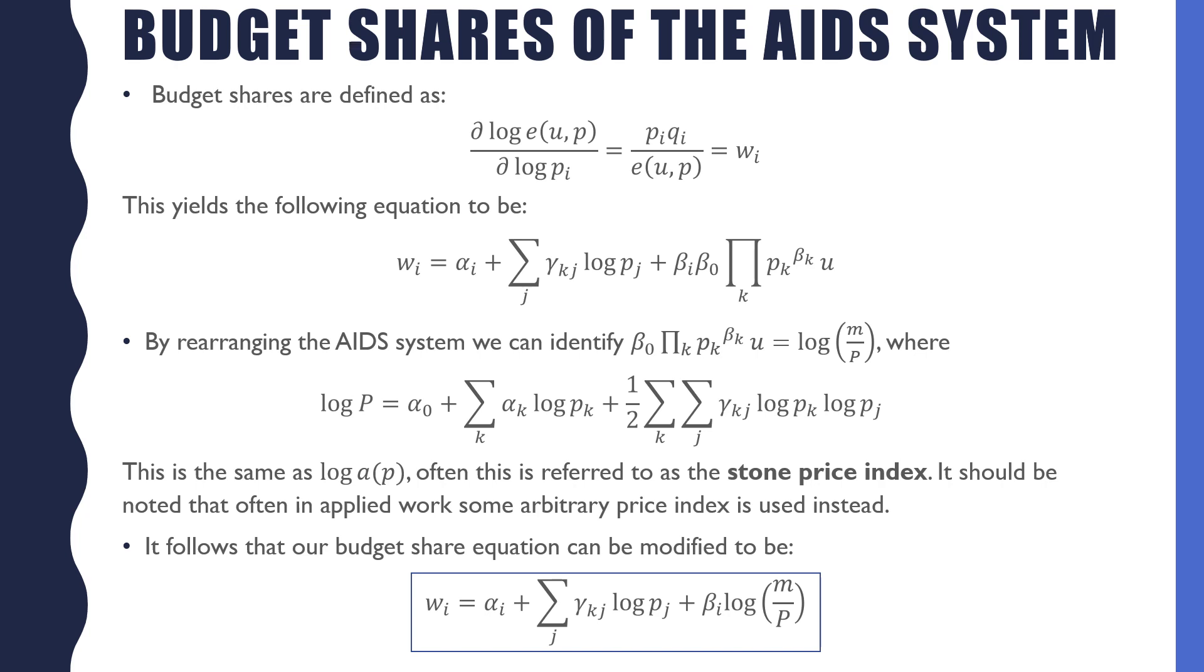By rearranging the almost ideal demand system, we can identify this ambiguous term as log of m over P, m being our expenditure function all over P, where P is just our a(P) term, or logged a(P) term. This is often referred to as the stone price index. It should be noted that often in applied work, some arbitrary price index is used instead, so that's kind of a little bit cheating.